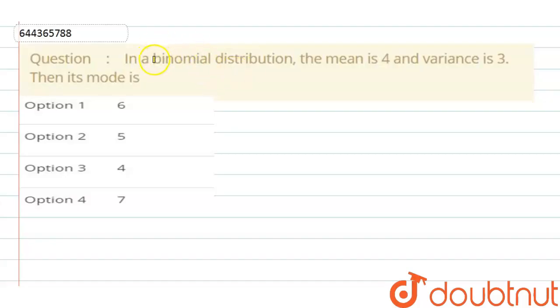Hello students, in this question we have given a binomial distribution and also given that mean equal to 4 and variance equal to 3 and basically we need to find the value of mode.